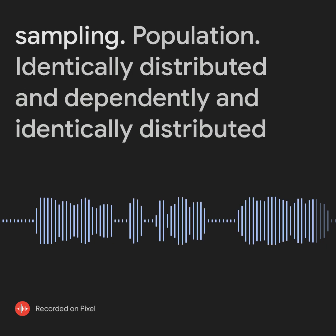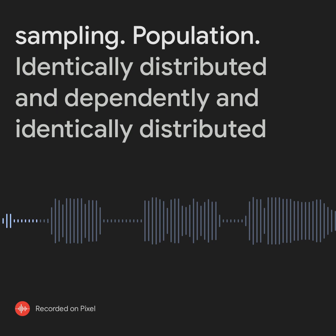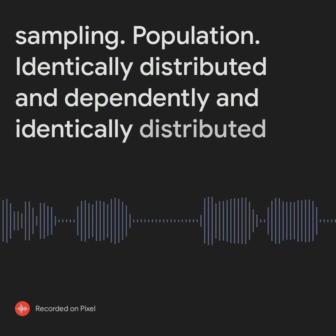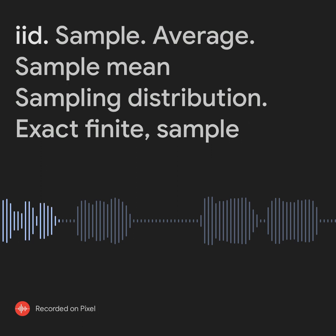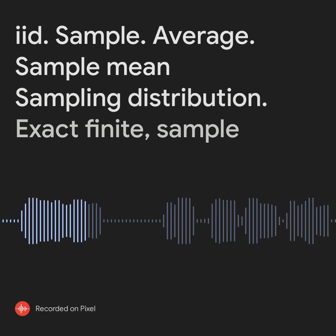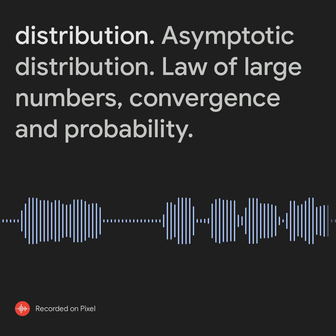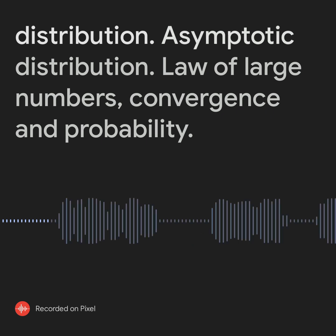Simple Random Sampling. Population. Identically Distributed. Independently and Identically Distributed. IID. Sample Average. Sample Mean. Sampling Distribution. Exact Finite Sample Distribution. Asymptotic Distribution.